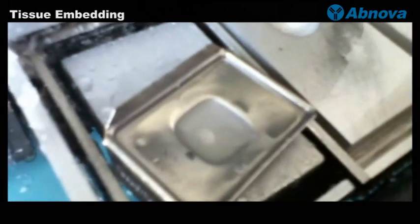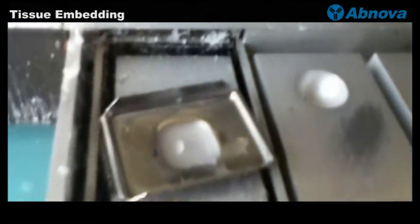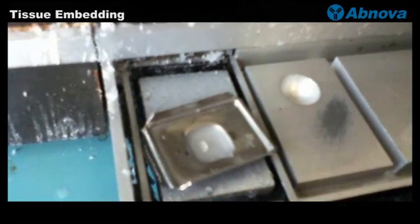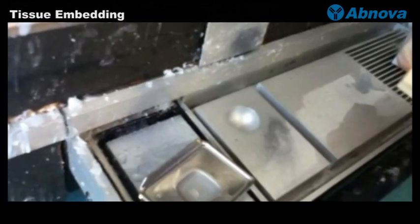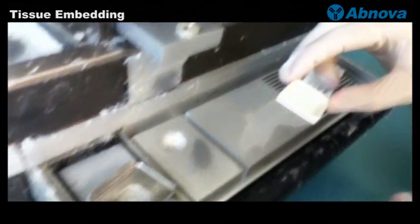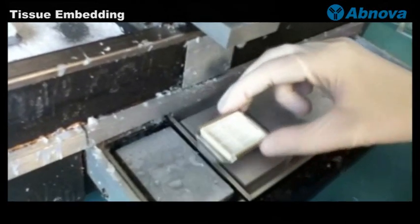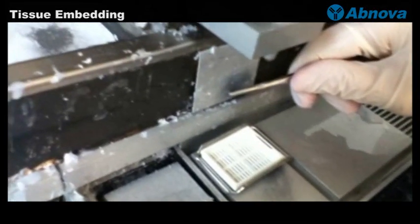The bone chip has been standing vertically and perpendicular to the block surface. You can take the whole metal mold to the dispenser and put the cassette tray on top, and dispense more paraffin on top to finish the whole block embedding process.